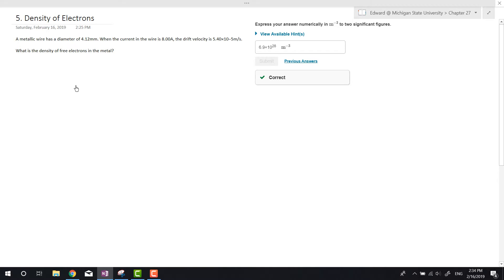This is question 5 in chapter 27. The question asks us about a metallic wire with a diameter of 4.12 millimeters. So I'm going to write that down. The diameter is 4.12e to the minus 3 meters, and the current in the wire is 8 amps. So I is equal to 8 amps, and the drift velocity is equal to 5.4 times 10 to the negative 5 meters per second.